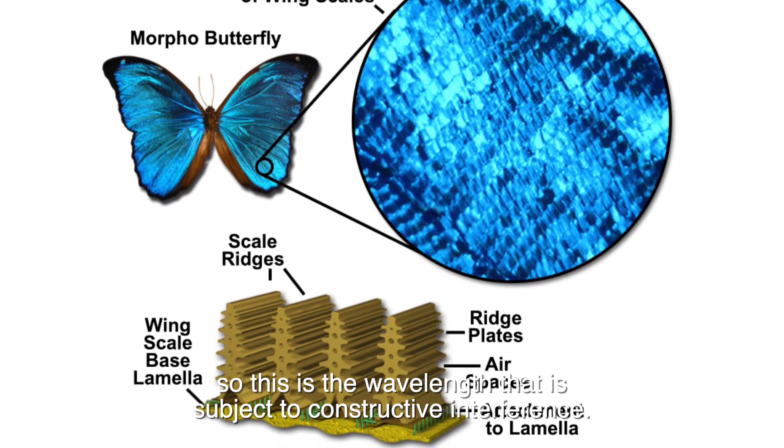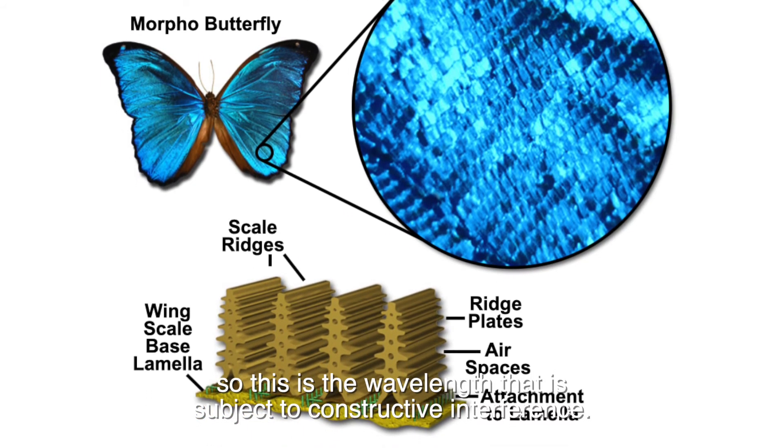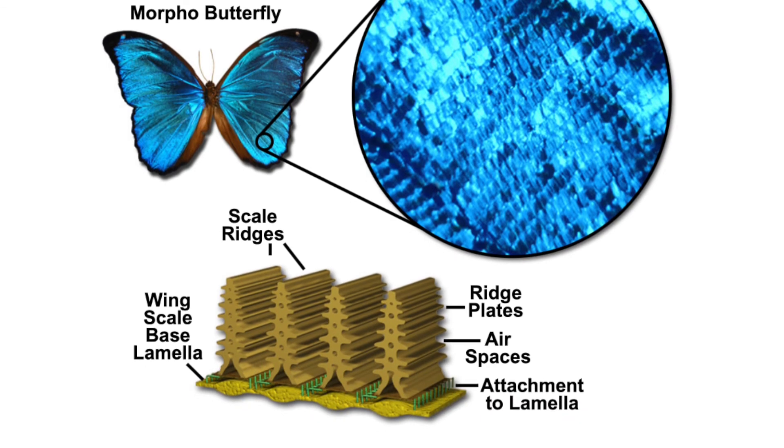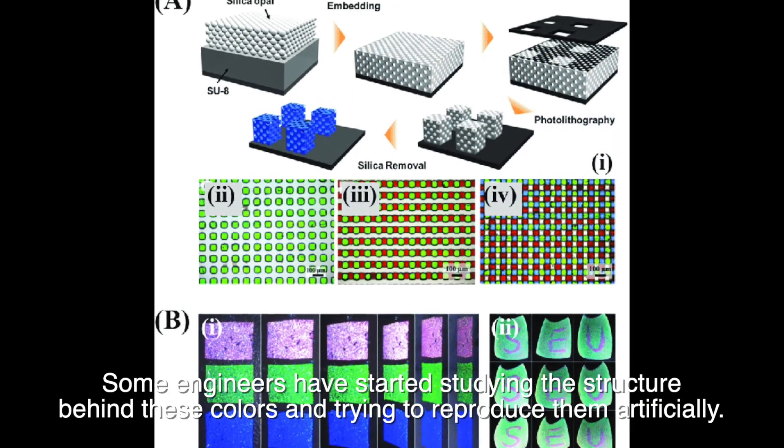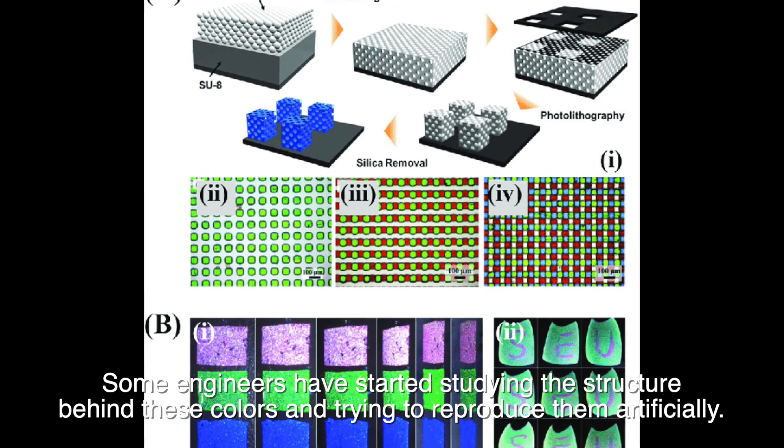So this is the wavelength that is subject to constructive interference. Some engineers have started studying the structure behind these